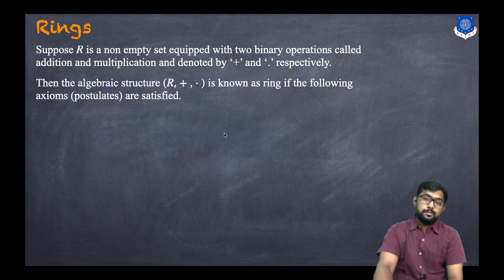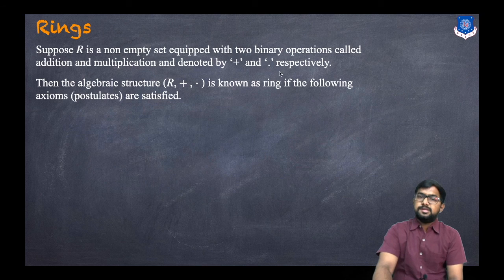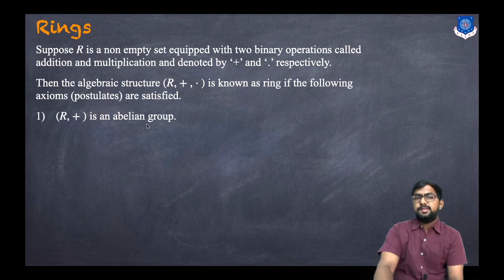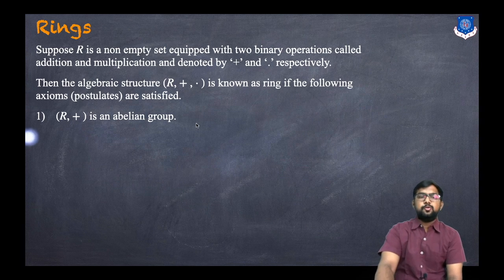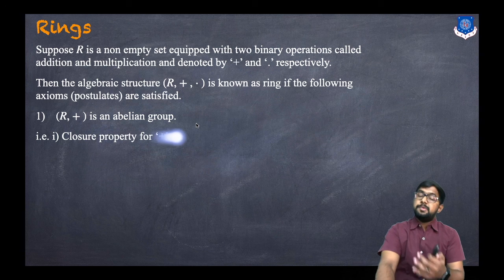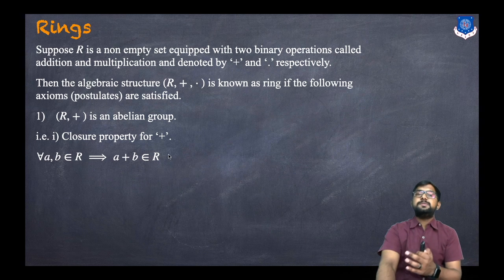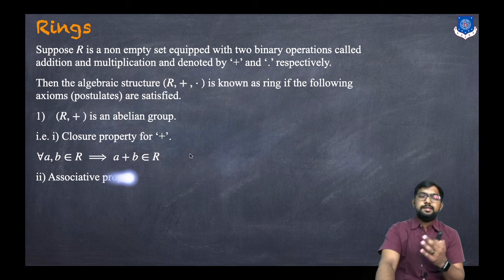We have two binary operations — plus and dot. The first axiom is that (R, +) is an abelian group. For an abelian group, we check: first, the closure property — for every A, B belonging to R, A + B belongs to R.